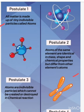Number four: atoms of different elements combine in ratios of small whole numbers to form compounds. Number five: atoms of elements can combine in more than one ratio to form different compounds, and their combining ratio is different in different compounds.